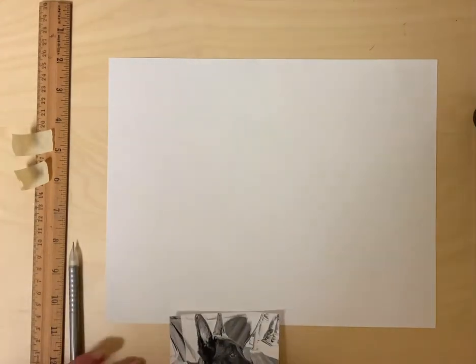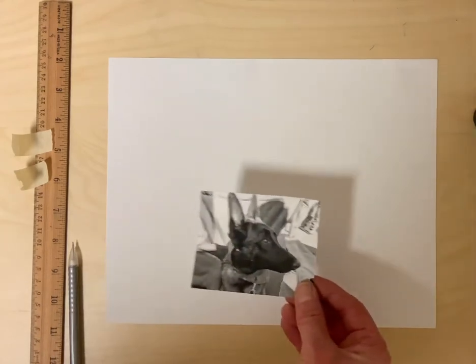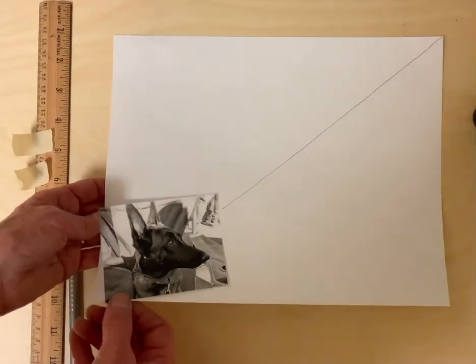Now I'm going to show you how to expand your photo onto your piece of paper that you measured. Remember this is the piece of paper where I got my dimensions correct. For this you're going to need a pencil, a ruler, and a couple of pieces of tape.